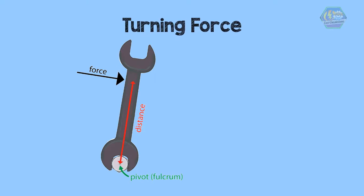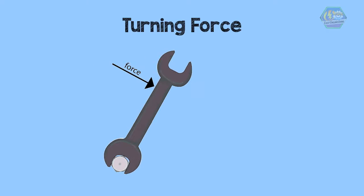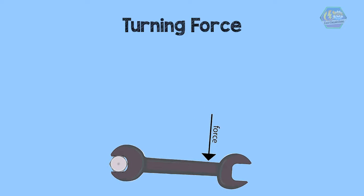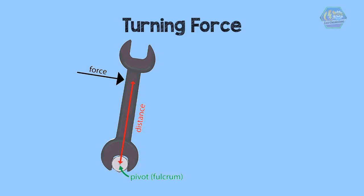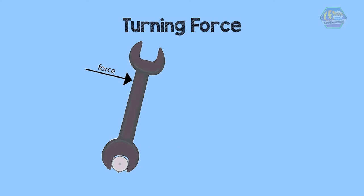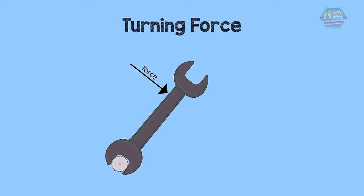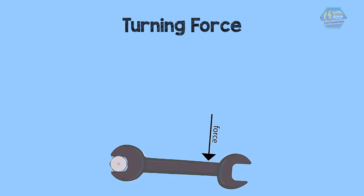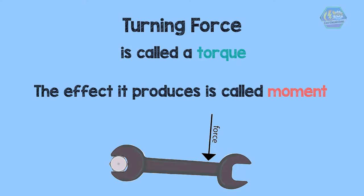Lastly, we have turning force. If an object is fixed at one point and can rotate around it, that point is called a pivot. If a force acts on the object, the object turns around the pivot. The turning force is called a torque, and the effect it produces is called a moment.